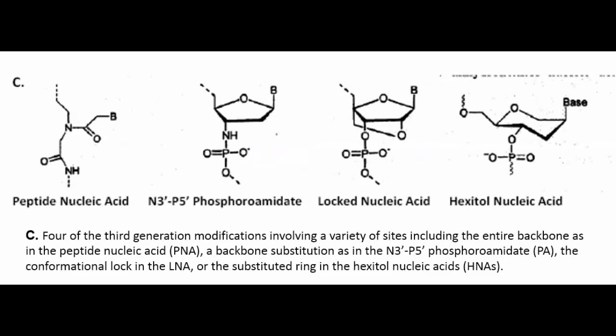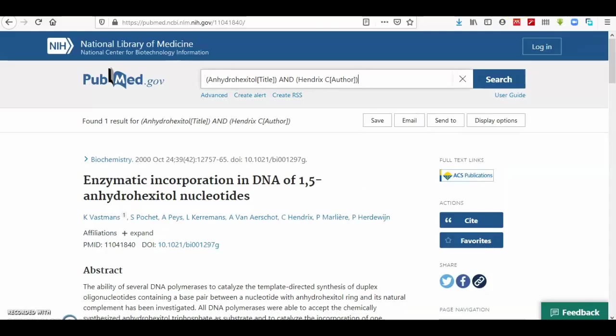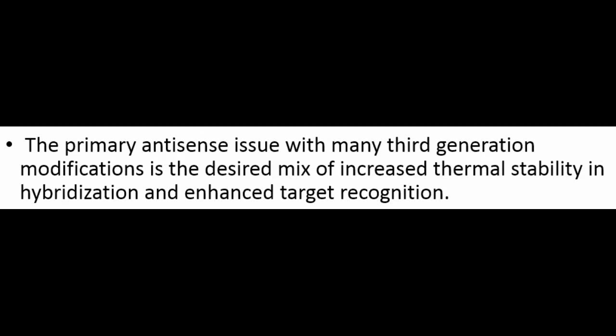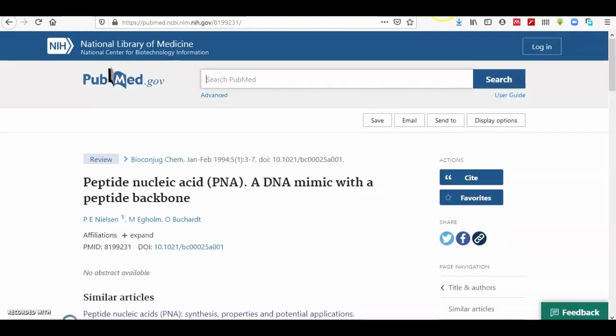These structures are shown in Figure 2c. A more thorough discussion of third generation modifications can be found in Verduijn and in Coruк. The primary antisense issue with many third generation modifications is the desired mix of increased thermal stability in hybridization and enhanced target recognition. One of the earliest constructs to address these was the peptide nucleic acid (PNA).